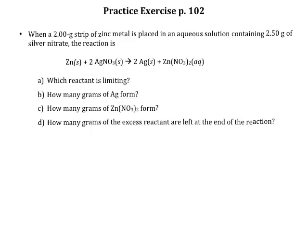This is a practice exercise from page 102 in the textbook. We're doing a stoichiometric calculation, starting with grams of two reactants, trying to figure out which reactant is limiting, and figuring out how many grams of the products were produced.